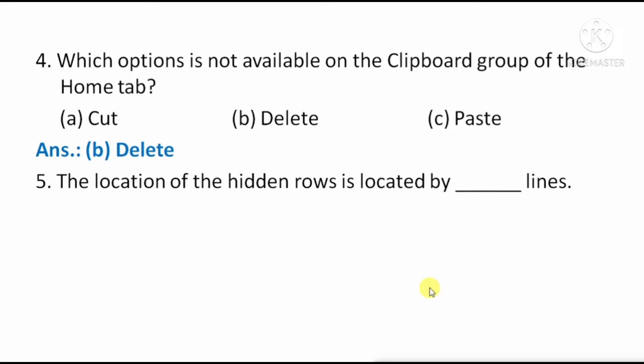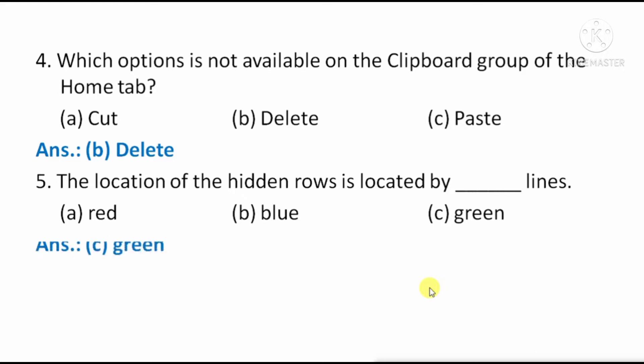The location of hidden rows is indicated by what kind of lines? Option A: Red. Option B: Blue. Option C: Green. The right answer is Option C, Green.